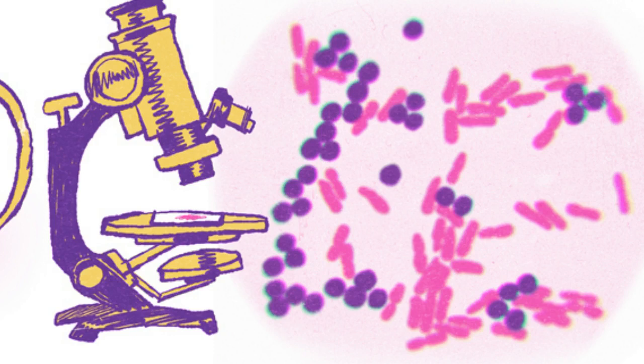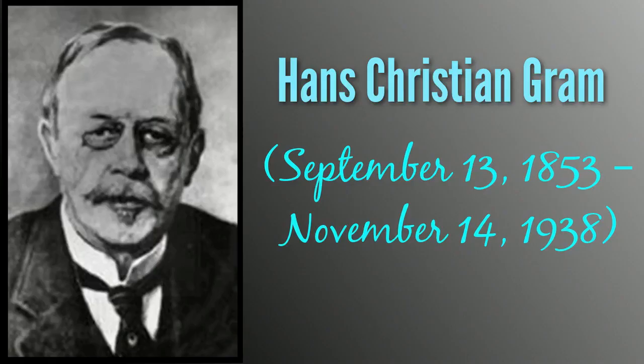Gram-positive bacteria appear purple under a microscope because their cell walls are so thick that the solvent cannot penetrate them, while Gram-negative bacteria have thinner cell walls that allow the solvent to wash away the stain.